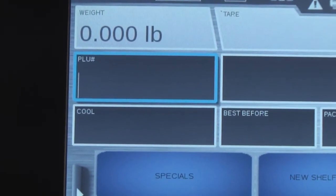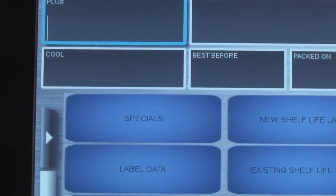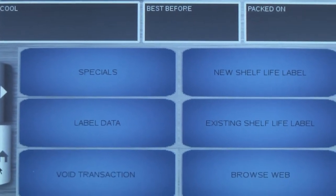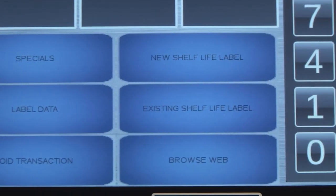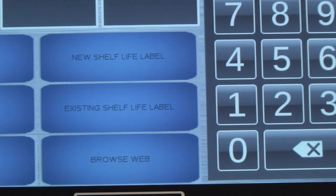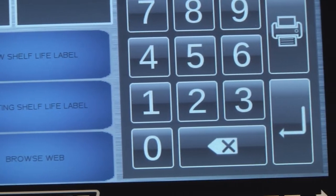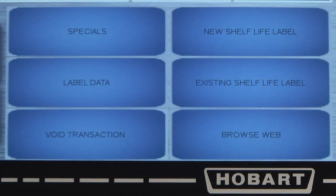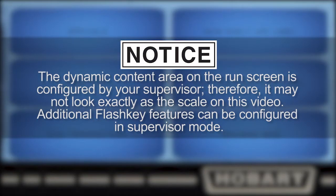The Flash Key Editor allows the operator to set up quick and easy access to various scale functions and frequently used PLUs. Final Flash Keys will appear in the dynamic content area of the center screen or the run screen. Note, the dynamic content area on the run screen is configured by your supervisor. Therefore, it may not look exactly as the scale on this video. Additional Flash Key features can be configured in supervisor mode.